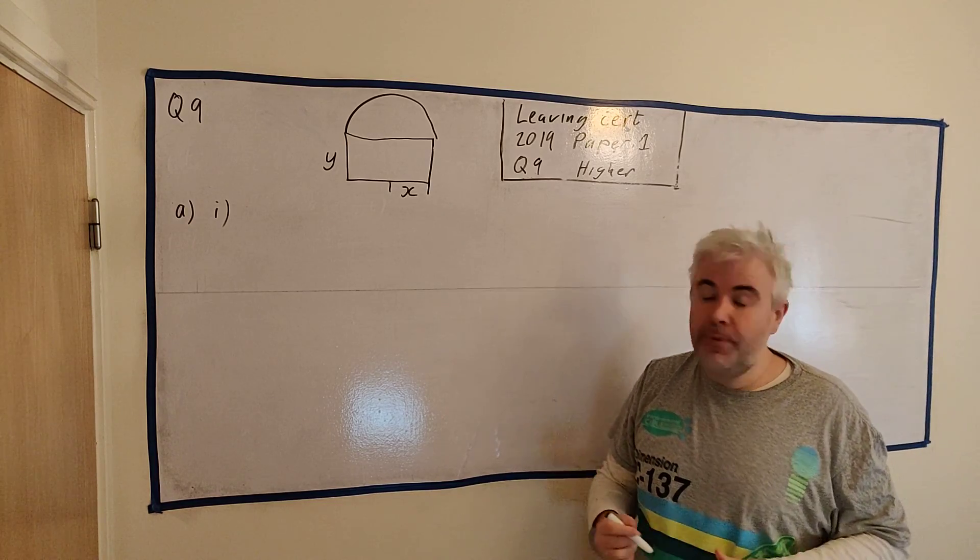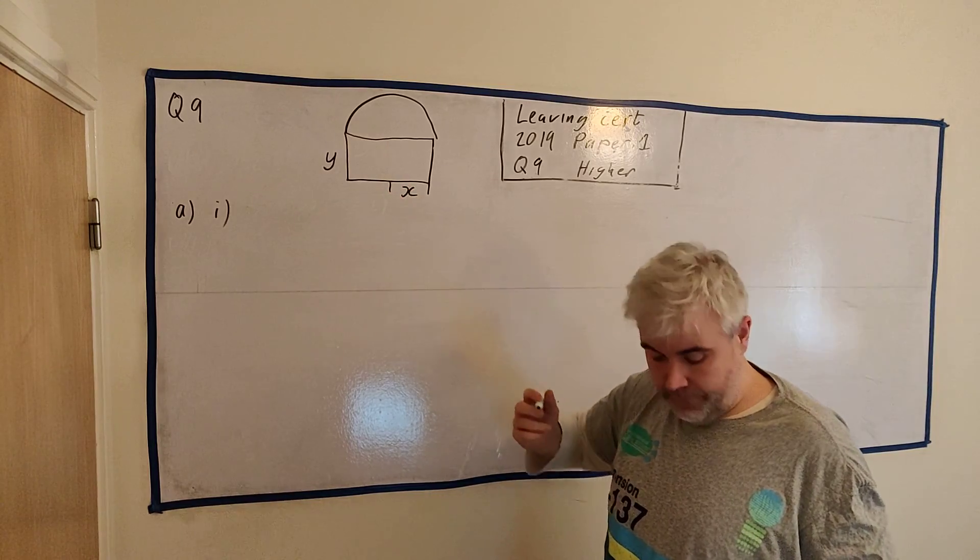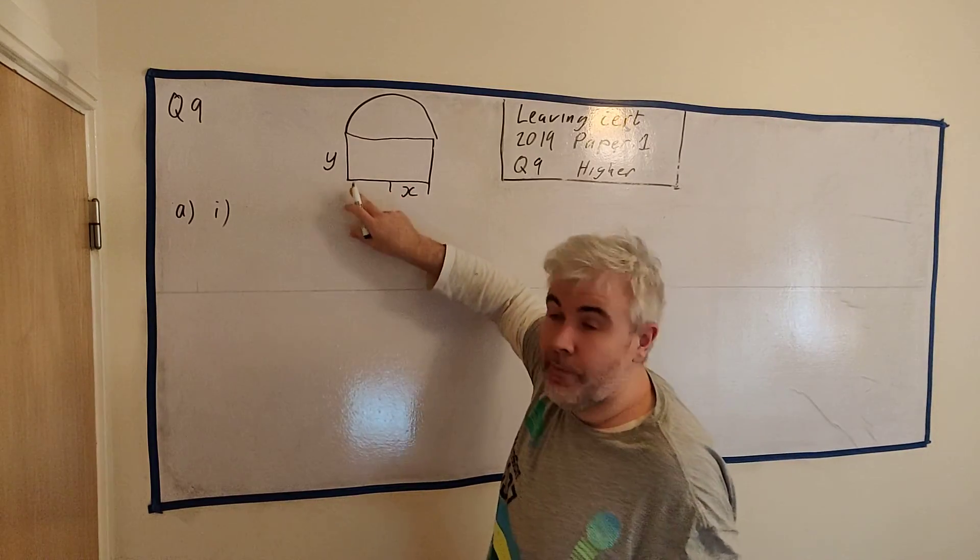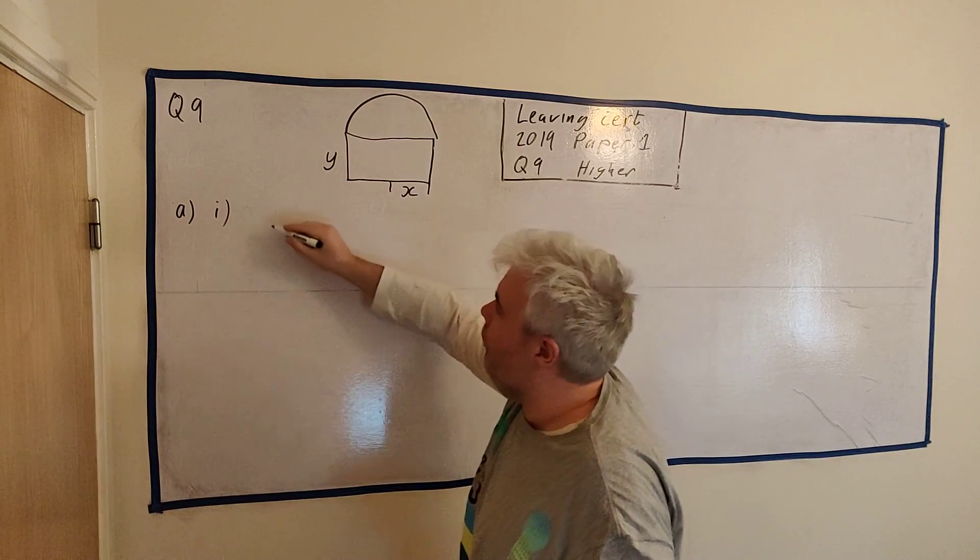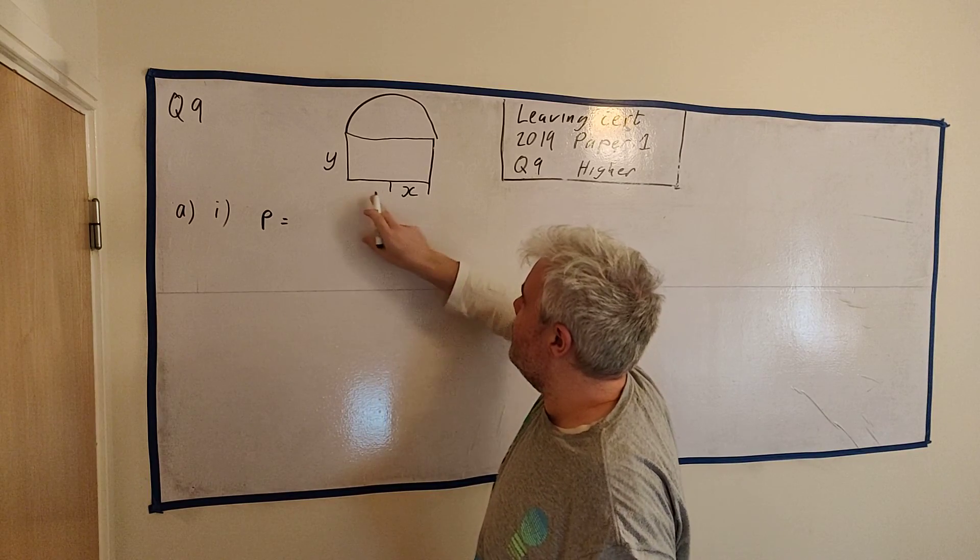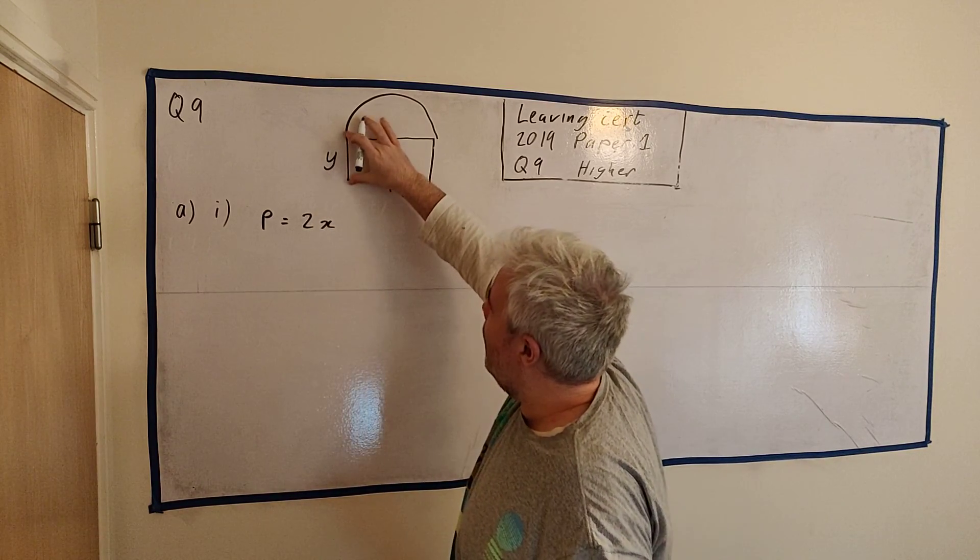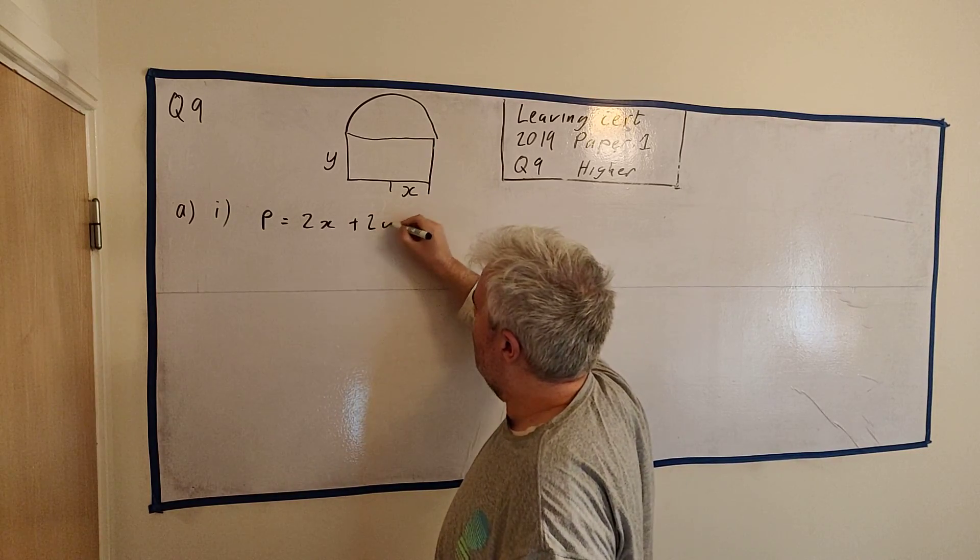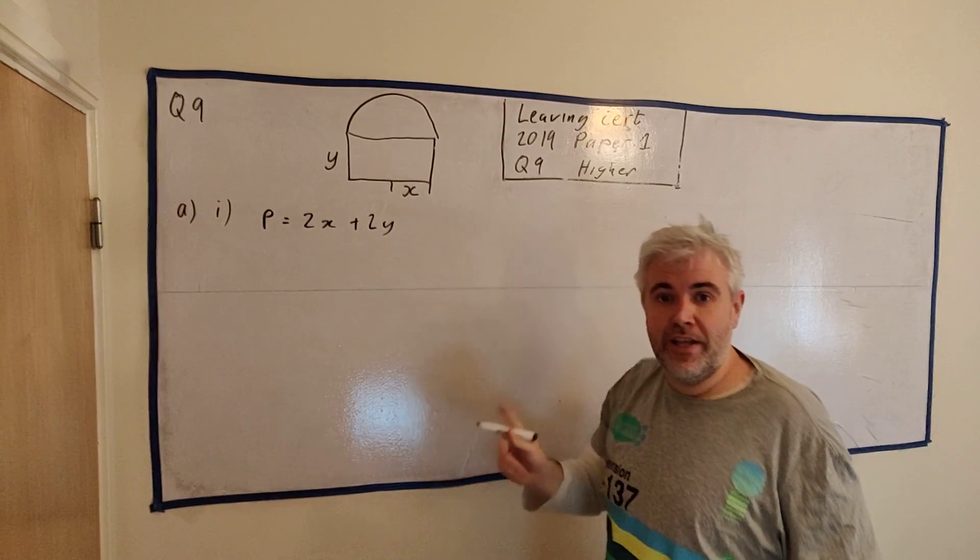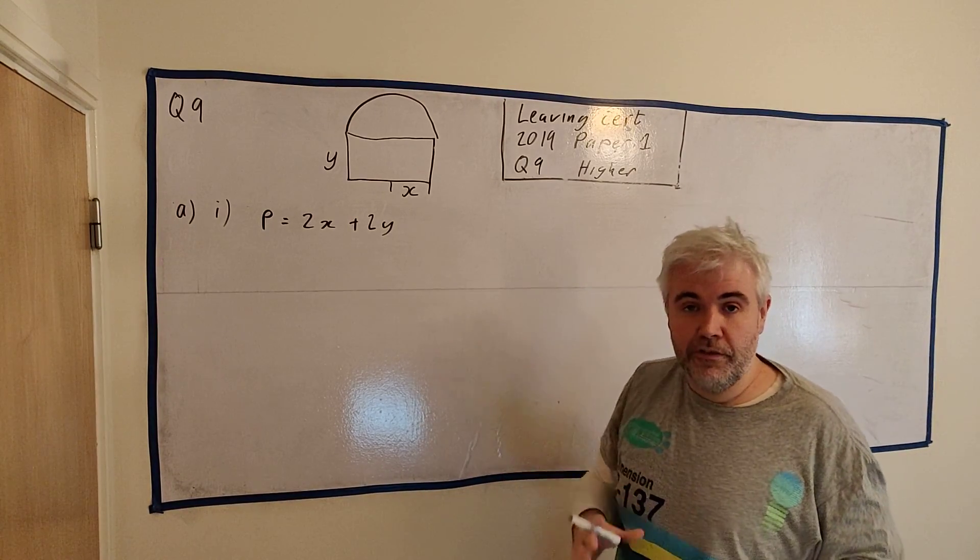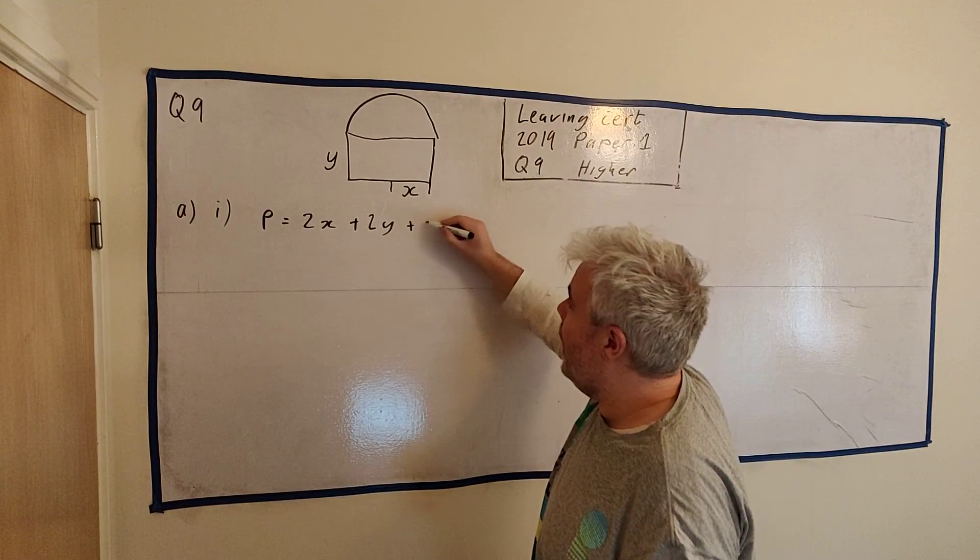So the first question they ask us is, part A1, write p in terms of x, y, and π. So p is simply the perimeter, they say p is the perimeter all the way around this window. So p is just equal to x plus another x, two x's, y plus another y, two y's, plus an entire circle. The circumference of an entire circle is 2πr. So half the circle is just πr, and r is x.